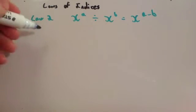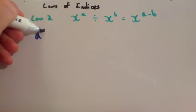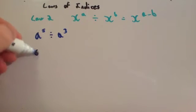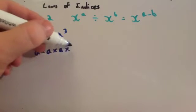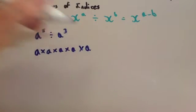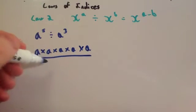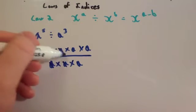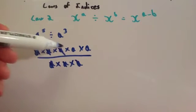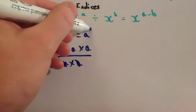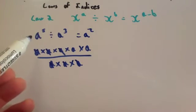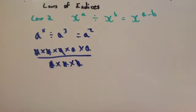Let's look at an example and see why that's the case. So if you had a to the power of 5 and you divide it by a to the power of 3, well you've got a to the power of 5, so that's a times a times a times a times a, and you're going to divide that by a cubed, which is a times a times a. Well, a divided by a is 1, so they cancel — three pairs cancel. So you're left with a times a, which is a squared. And if you notice, if you do 5 subtract 3, you get 2, your power. So a to the power of 5 divided by a to the power of 3 is a to the power of 2.